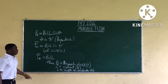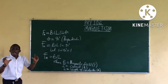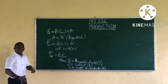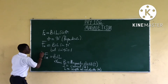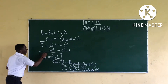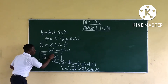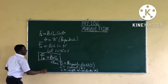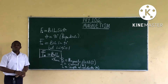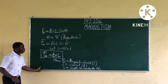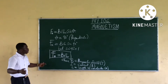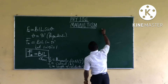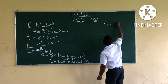F = BIL is used to calculate any question that mentions a wire or conductor. If you see a question asking to calculate the force in a wire or conductor, you use this formula: F equals BIL — the product of the magnetic field, the current, and the length of the conductor.